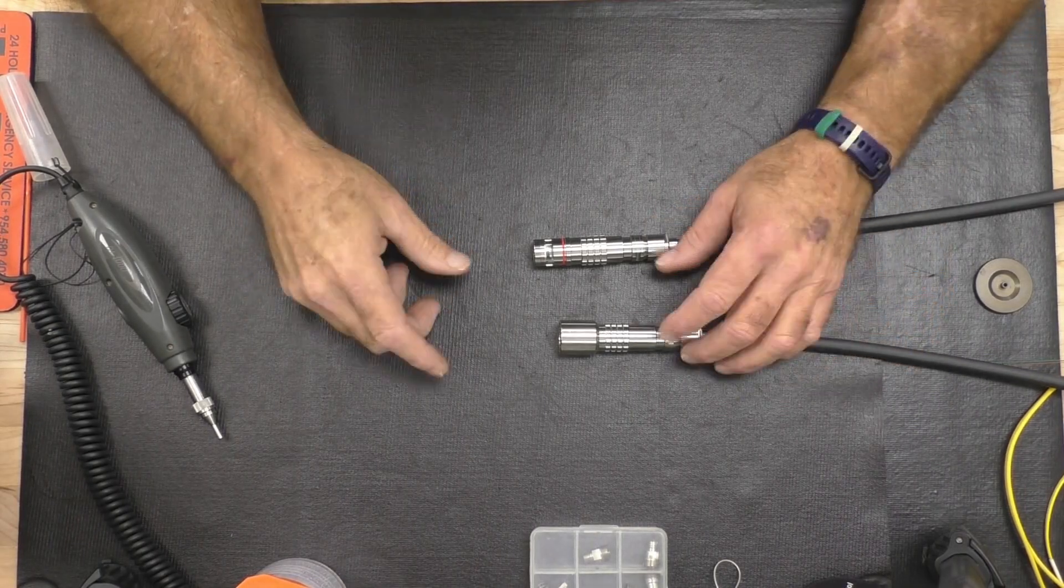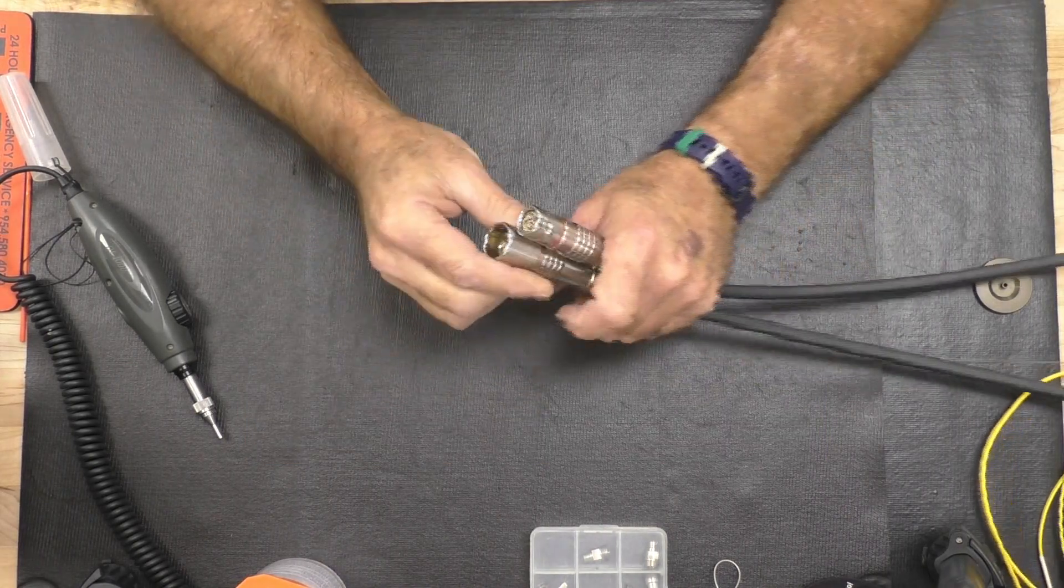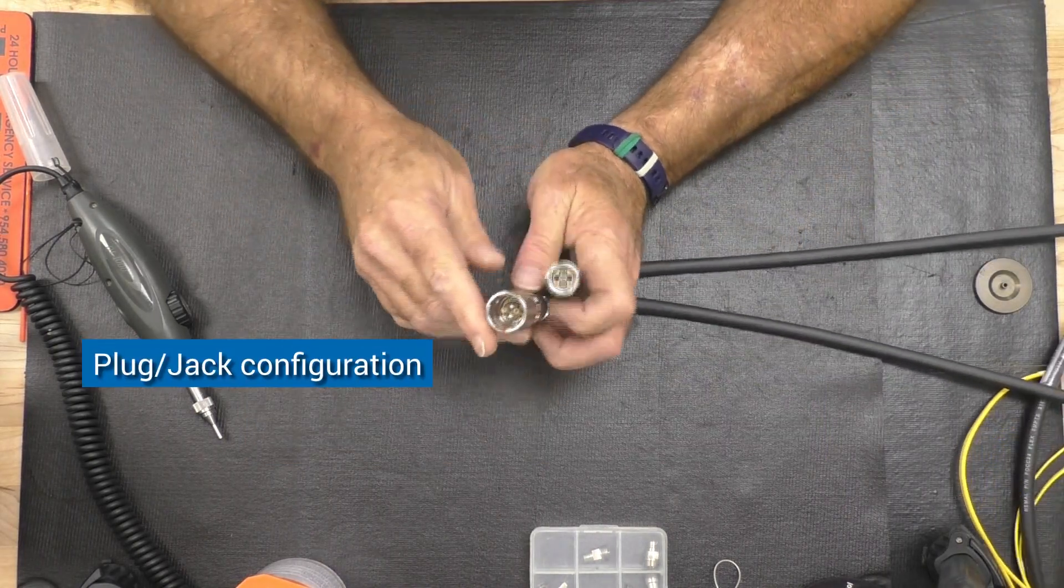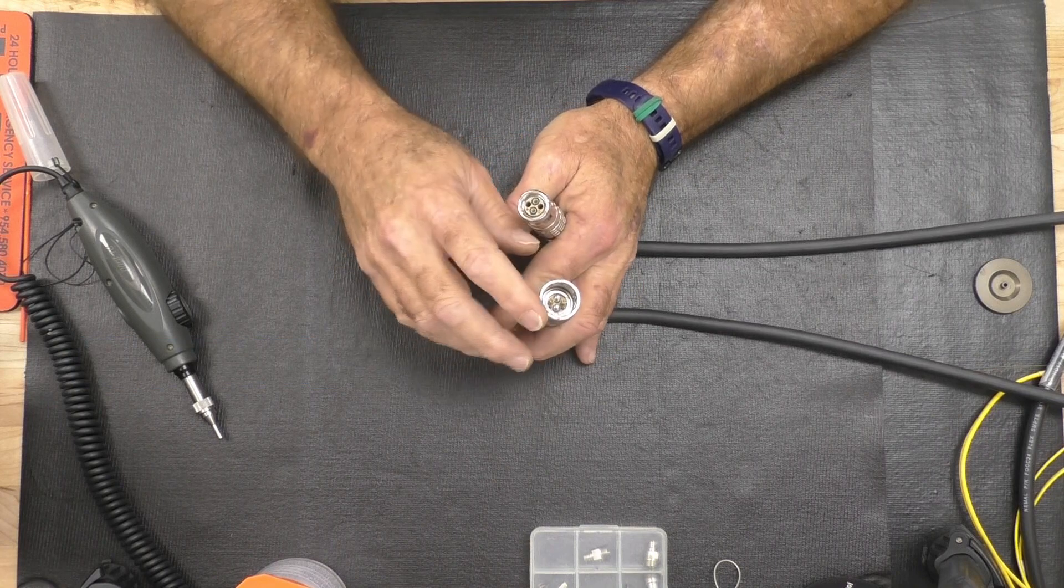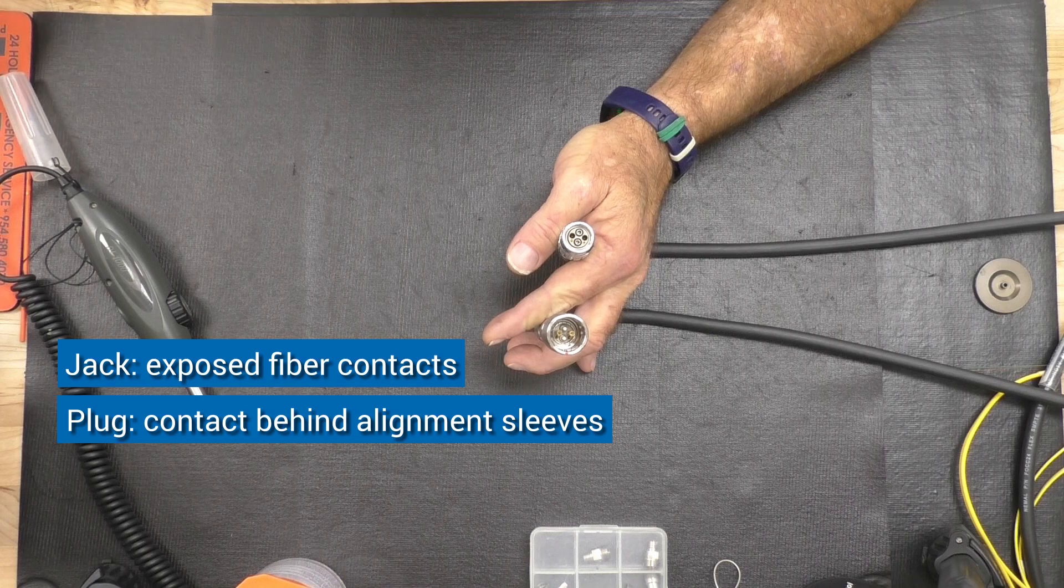Next I'd like to discuss the cleaning of the Lemos Sempty. Sempty comes in a plug-jack configuration. The jack has exposed fiber contacts, while the plug has contacts behind alignment sleeves.